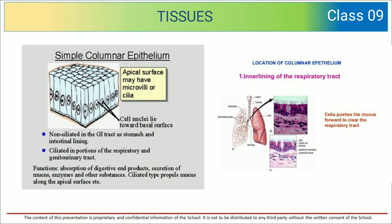Simple columnar epithelium has a surface with microvilli or cilia. Non-ciliated types are found in tracts such as the stomach and intestinal lining. Ciliated types are found in portions of the respiratory tract. Functions include absorption of digestive end products and secretion of mucus, enzymes, and other substances. The location of columnar epithelium includes the inner lining of the respiratory tract.